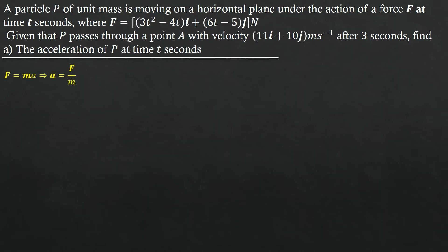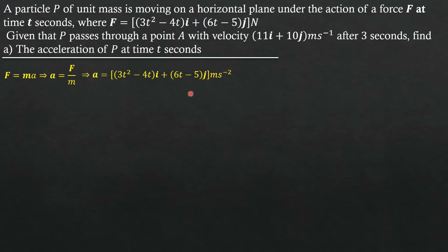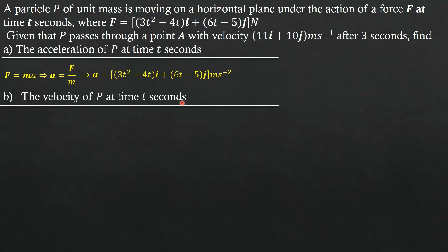To find the acceleration, we use the relationship between force and acceleration. The force of particle P equals its mass times its acceleration, so acceleration equals force divided by mass. According to the question, particle P has unit mass, meaning mass equals 1 kilogram. So the acceleration is simply equal to the force: (2T² − 4T)i + (6T − 5)j. It's very important to include the units.